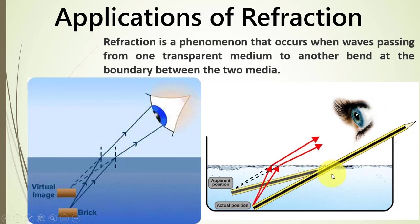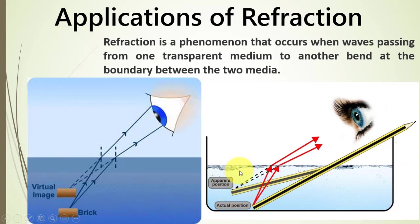If we look at a pencil in water, the pencil also appears bent due to the same principle of bending of light rays — we trace the rays back in a straight line and see the edge of the pencil at an apparent position rather than its actual position. So whenever light travels between different media, we always see the apparent location and not the actual location of the body.